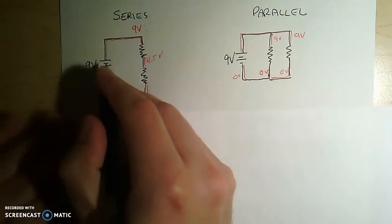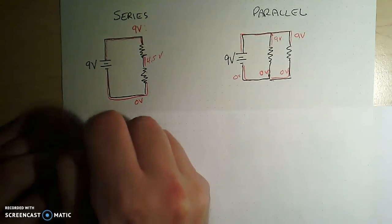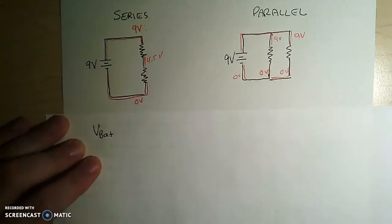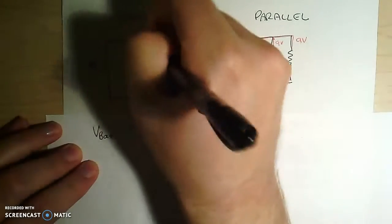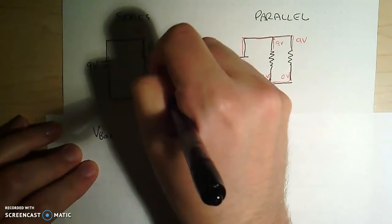What that means is this 9 volt battery, so we can say whatever the voltage of the battery is, has to be shared between the two resistors.